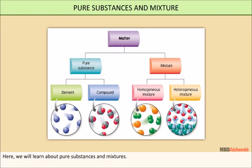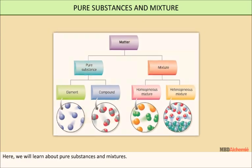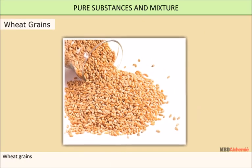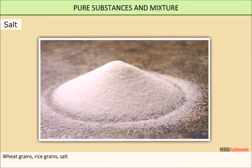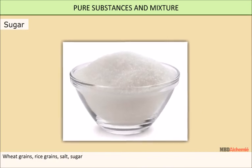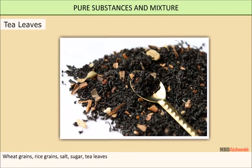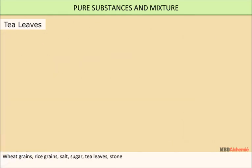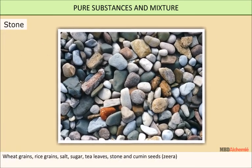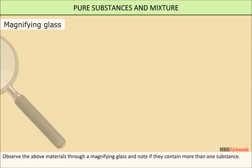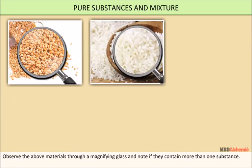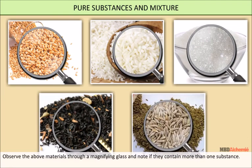Here we will learn about pure substances and mixtures. Collect some amounts of wheat grains, rice grains, salt, sugar, tea leaves, stone, and cumin seed. Observe through a magnifying glass. You will observe that wheat grains, rice grains, sugar, tea leaves, and cumin seed are made up of one kind of substance. Such substances are called pure substances.